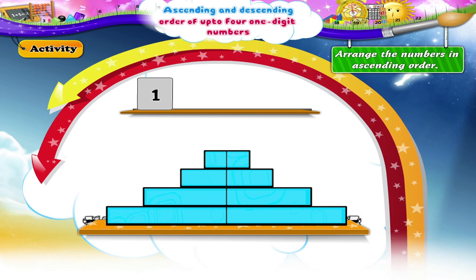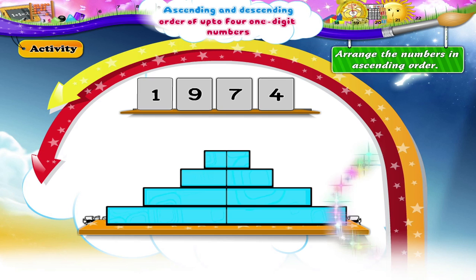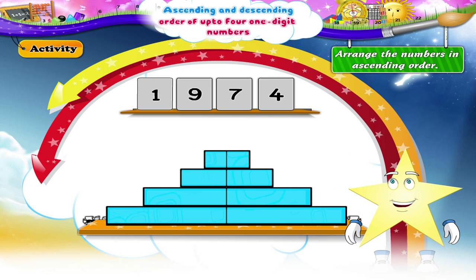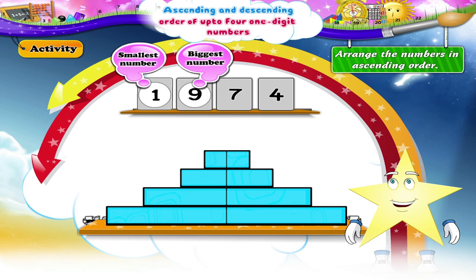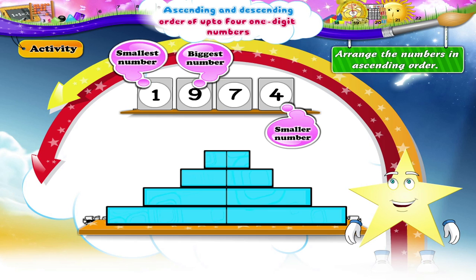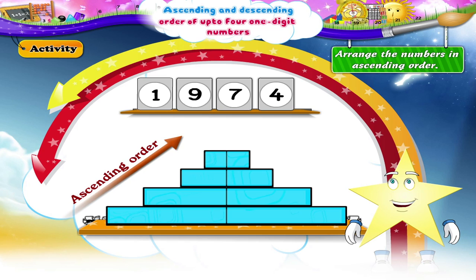One, nine, seven, four. Here, Starry, the smallest number is one. The biggest number is nine. Between seven and four, four is the smaller number. The numbers in ascending order are one, four, seven, nine.